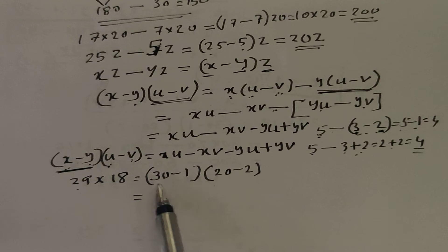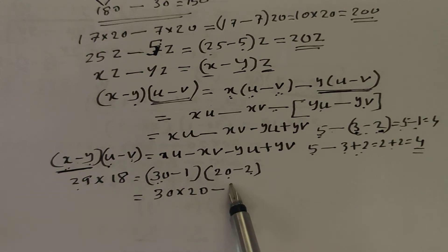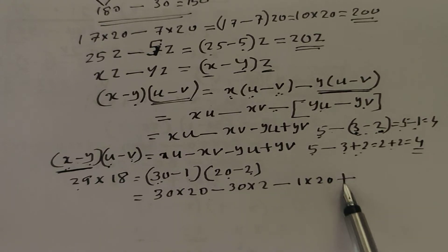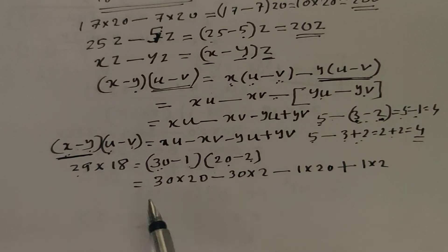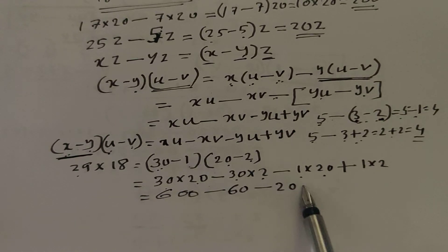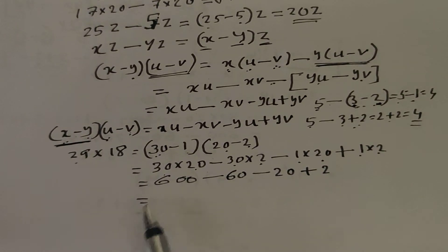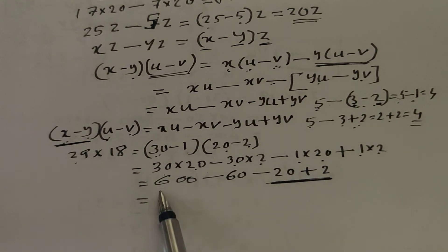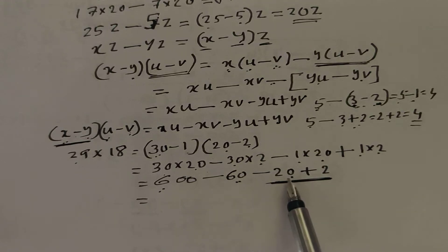Then the calculation is set as 30 into 20, minus 30 into 2, minus 1 into 20, and the last term — minus minus — is plus 1 into 2. 30 into 20 is 600. 30 into 2 is 60. 1 into 20 is 20. Plus 1 into 2 is 2. So 600 minus 60 is 540, minus 20 is 520, plus 2 gives 522.